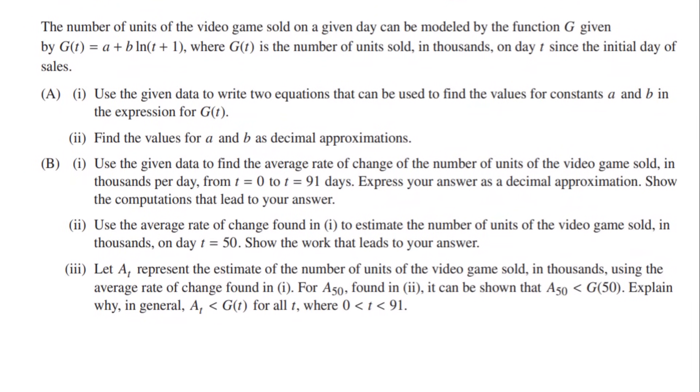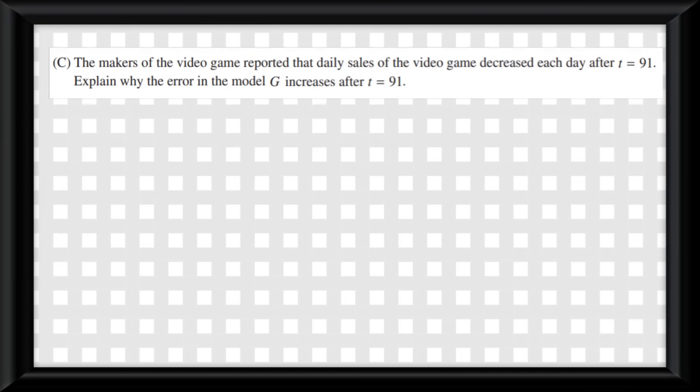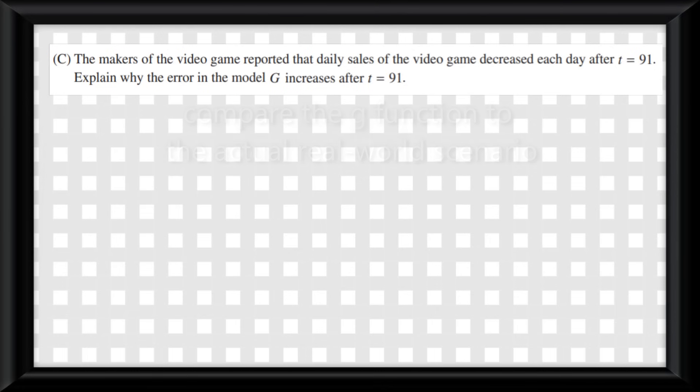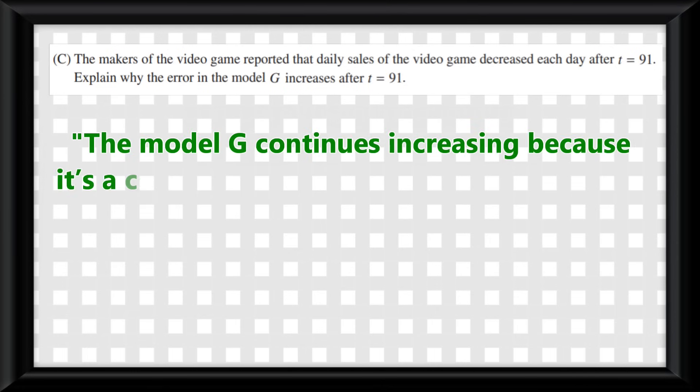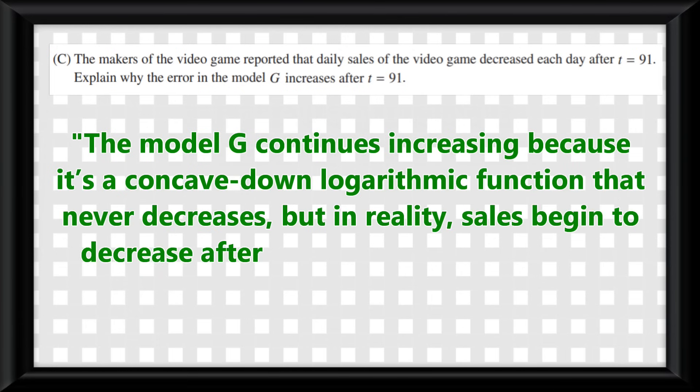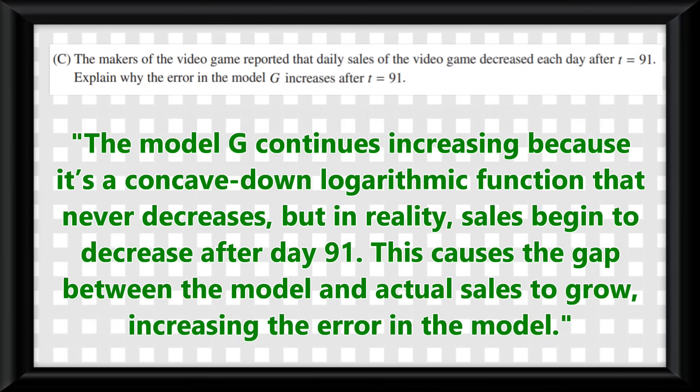And on to the last problem. The makers of the video game reported that the daily sales of the video game decreased each day after t equals 91. Explain why the error in the model g increases after t equals 91. This one is easy. To get full points, we need to compare the g function to the actual real-world scenario so we can say something like, the model g continues increasing because it's a concave down logarithmic function that never decreases. But in reality, sales begin to decrease after day 91. This causes the gap between the model and actual sales to grow, increasing the error in the model.